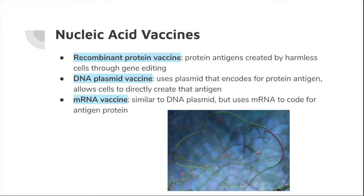Nucleic acid vaccines consist of recombinant protein, DNA plasmid, and mRNA vaccines. Recombinant protein vaccines use protein antigens created by harmless cells using gene editing. DNA plasmid vaccines allow cells to directly create the antigen through plasmids, which increase immune response and stability. Because DNA plasmids are relatively easier to produce, vaccine development can be quicker. mRNA vaccines are similar to DNA plasmid vaccines, but use mRNA to code for the antigen protein instead. Scientists are continually trying to reduce the instability and difficulty of delivering mRNA.